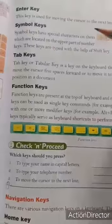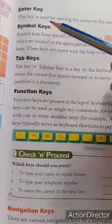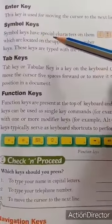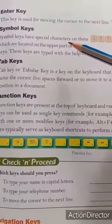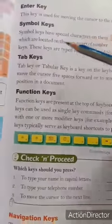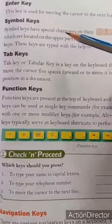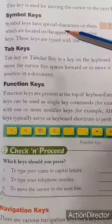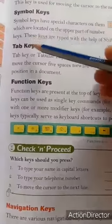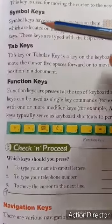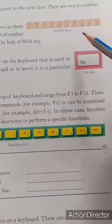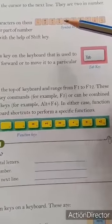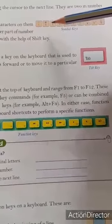Next is symbol keys. Symbol keys have special characters on them. Symbol keys के ऊपर कुछ खास तरह के characters होते हैं, which are located on the upper part of number keys — जो number keys के ऊपर वाले हिस्से पर स्थित होते हैं। Pictures में देखिए — number keys बने हुए हैं और symbols उनके upper part पर होते हैं।